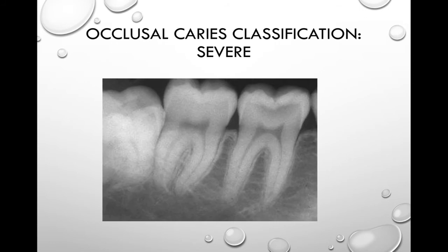Severe occlusal decay is a caries lesion that extends into the dentin and appears as a large radiolucency extending under the occlusal surface of the tooth. Once caries has progressed significantly, the enamel is undermined and can collapse. On this radiograph, we see a very large severe occlusal caries.